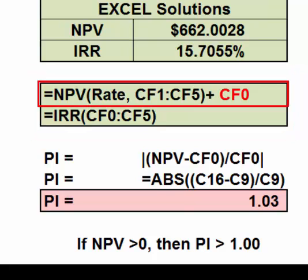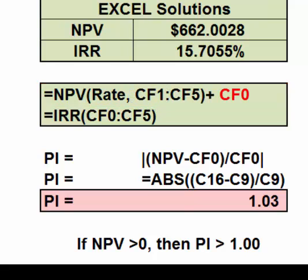Look at the example — cash flow zero must be handled outside the function. For whatever reason, when the Excel NPV function was originally created, it was designed to treat the first cell in the range as cash flow one and discount it back one period. Too late to change it now. The IRR function does not have the same issue; you give it the full range of cash flows.